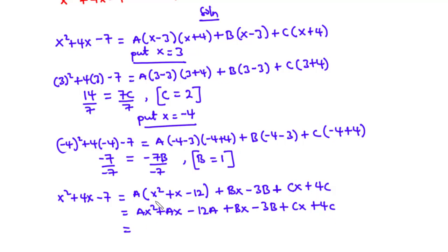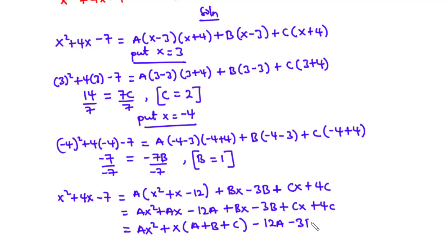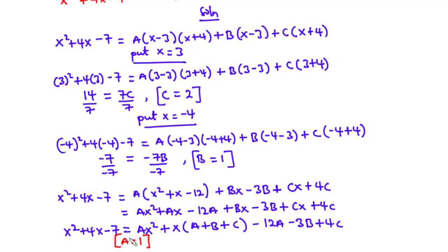Grouping like terms: ax² + (a + b + c)x + (−12a − 3b + 4c). Comparing with x² + 4x − 7: the coefficient of x² gives a = 1. We verify using the x coefficient: a + b + c = 1 + 1 + 2 = 4. ✓ Therefore, a = 1, b = 1, and c = 2.